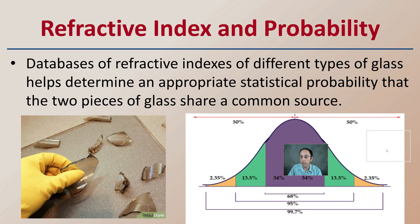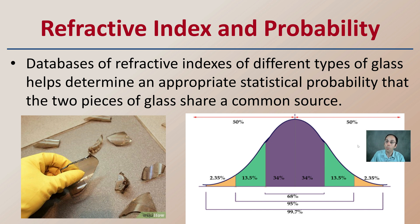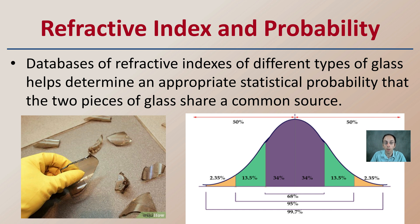The refractive index and probability — there's a database of refractive indexes for different types of glass, and this helps determine an appropriate statistical probability that two pieces of glass share a common source.